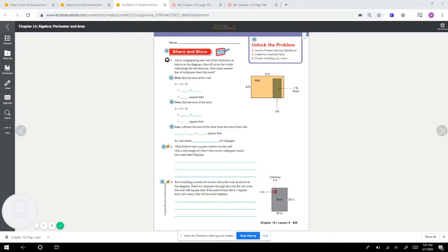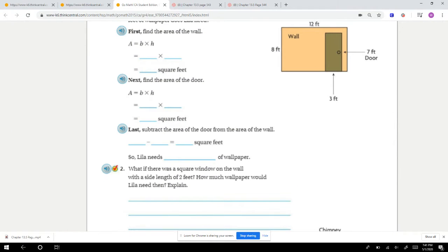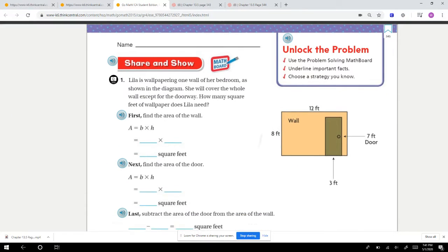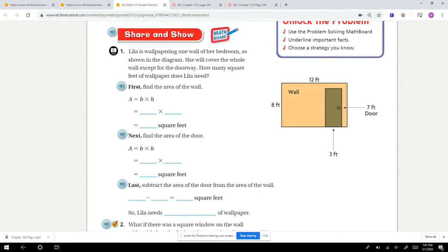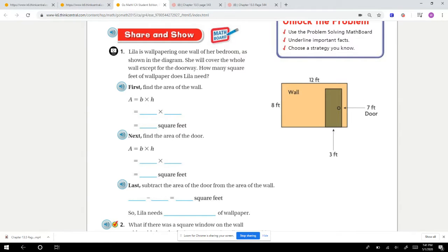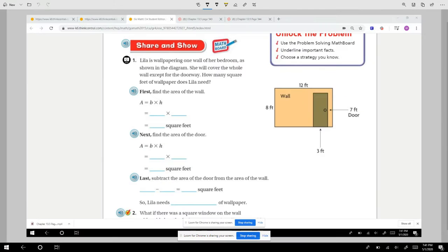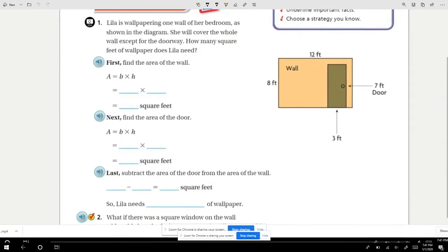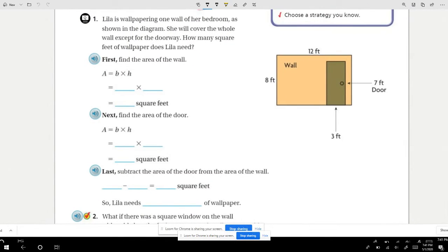We're going to be unlocking the problem. We're going to have a nice long share and show question here. I'm going to zoom in a little bit so we can take a look at question number one. Lila is wallpapering one wall of her bedroom as shown in the diagram. She will cover the whole wall except for the doorway. How many square feet of wallpaper does Lila need?